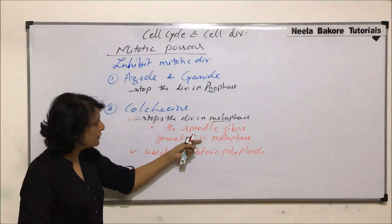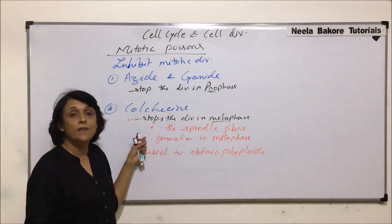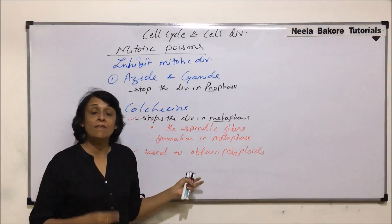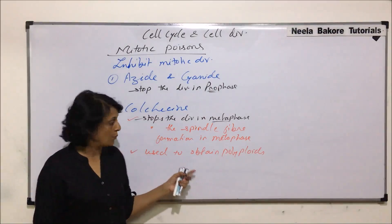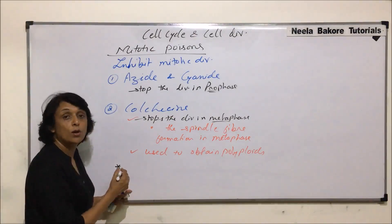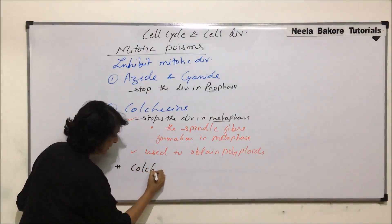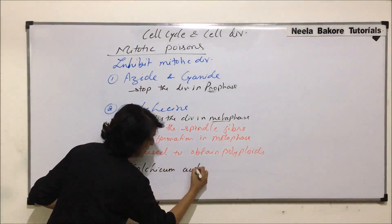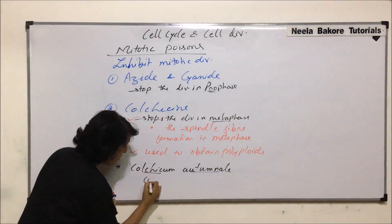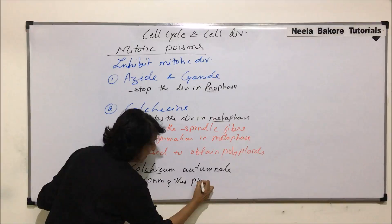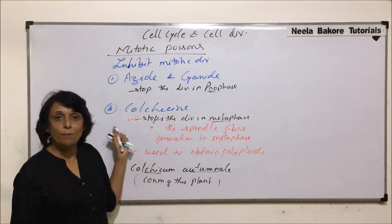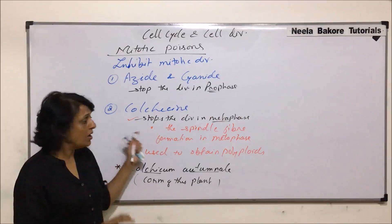Because colchicine does not let spindle fiber formation take place, the chromosomes will not separate and the single cell would have double the chromosomes — instead of 2N, it would be 4N — and that is polyploidy. Colchicine is obtained from a plant called Colchicum autumnale, and the chemical is obtained from the corm of this plant, which is the underground stem.